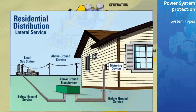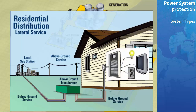From the substation, the residential power lines take the power above or below ground to a transformer, which steps the single-phase voltage down to a suitable level for home use. From the transformer, the power then enters the home through a metering device and is then routed to a load center. From the load center, power is routed to different areas of the home.